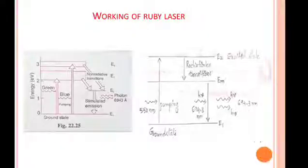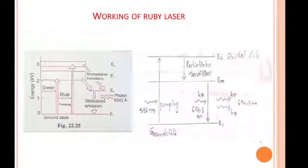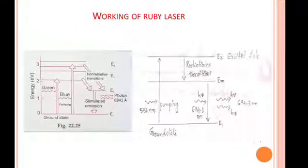The working of ruby laser: Ruby laser uses a three-level pumping scheme. In this scheme there is a ground state, an excited state, and a metastable state.